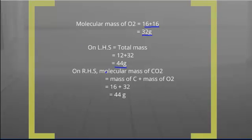Hence, the molecular mass of carbon dioxide is given by mass of carbon plus mass of oxygen. Mass of carbon is 16 grams and mass of oxygen is 32 grams. Hence, the total molecular mass of carbon dioxide is 44 grams.